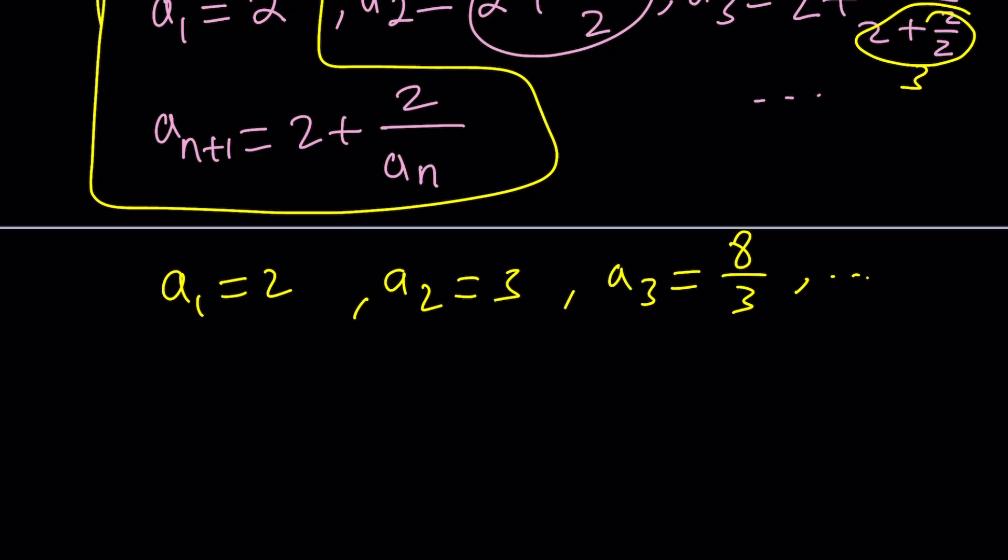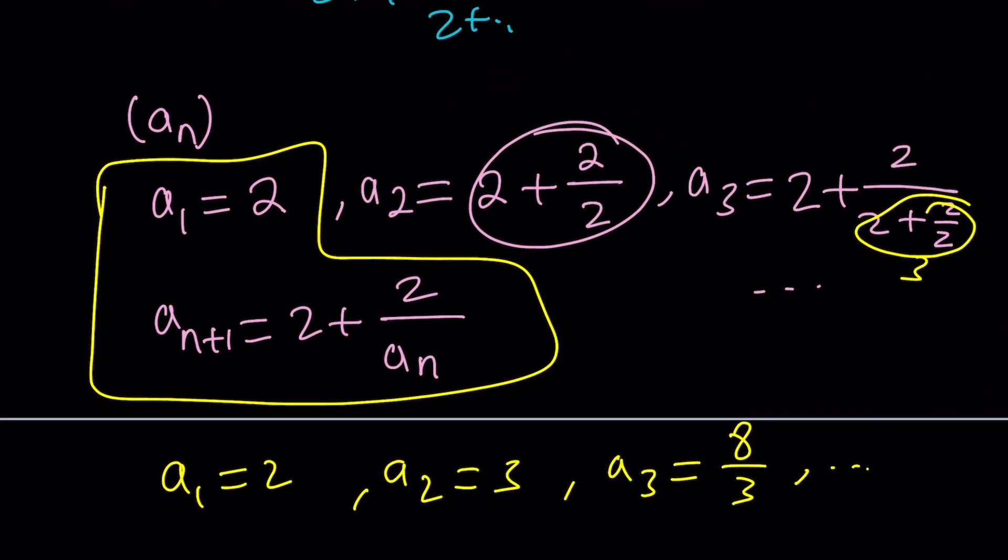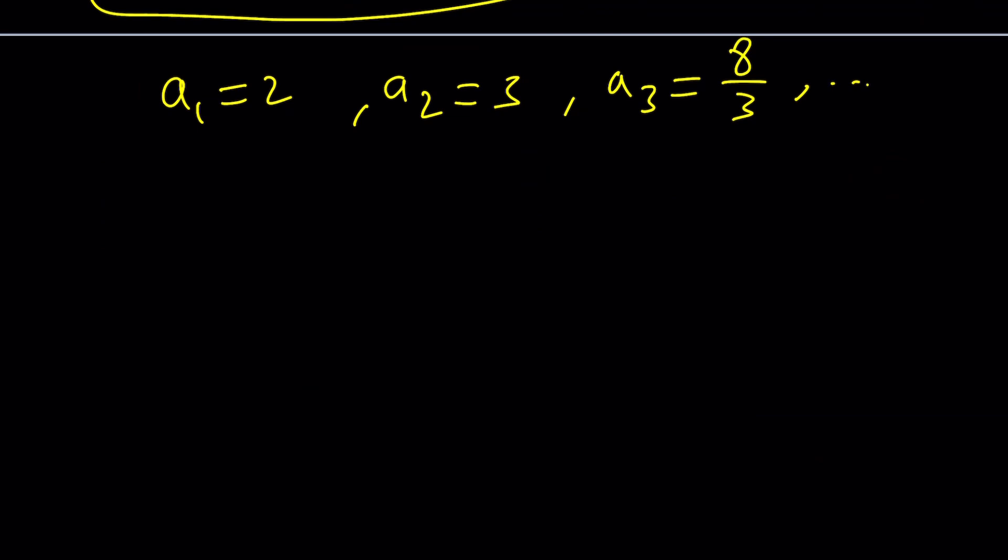Now, since we define this this way, we can go ahead and do the following. We can write this expression one more time as 2 plus 2 over 2 plus 2 over 2 plus 2 over dot dot dot.